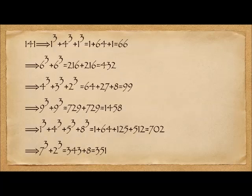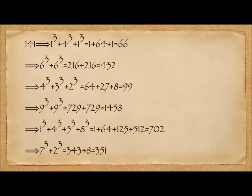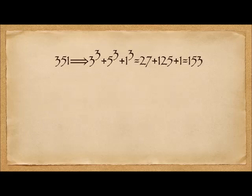Here's an example. I randomly chose 141, which is divisible by 3. Cube the 1, cube the 4, cube the 1: 1 plus 64 plus 1 gives 66. Take 66, cube both 6s, add them to get 432. Cube each digit of 432, come out to 99. Continue the process and eventually get to 351. And 351 will reduce to 153.